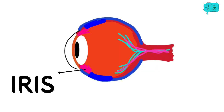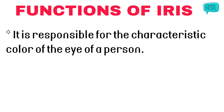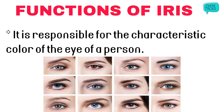Let's move on to the next part, which is the iris. The iris is a dark-colored muscular diaphragm which is present behind the cornea of the eye. If we talk about its function, the iris is responsible for the characteristic color of the eye of a person. When you look at someone's eyes, we say that the eyes are brown, blue, or black — that color we describe is exactly the color of the iris. In this diagram you can see many human eyes shown here with different pigmentation, and that pigmentation is because of the iris only.